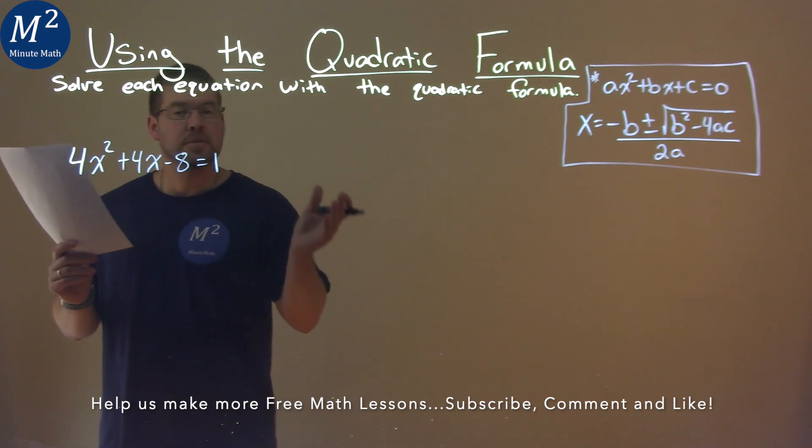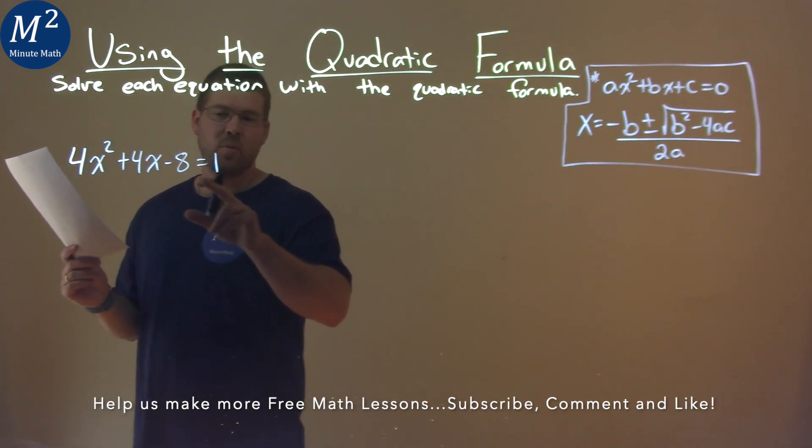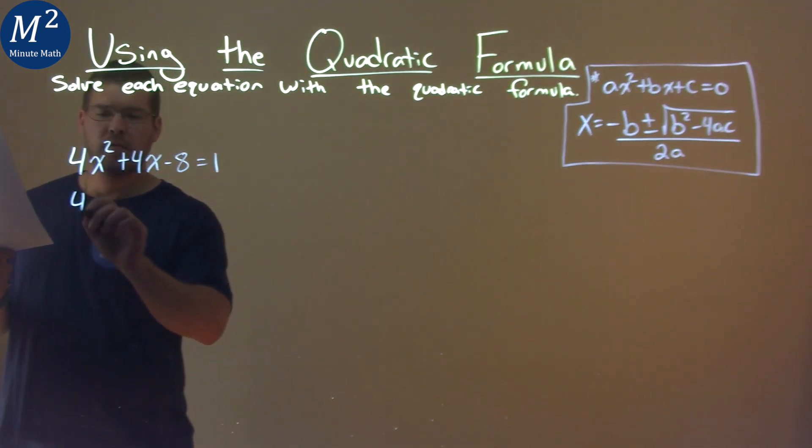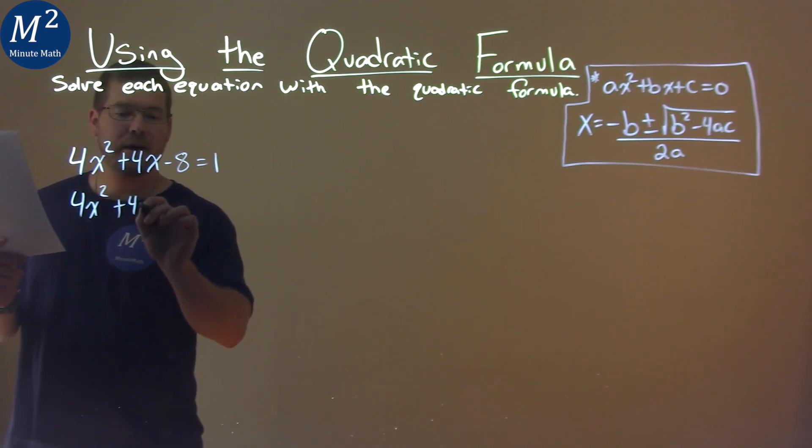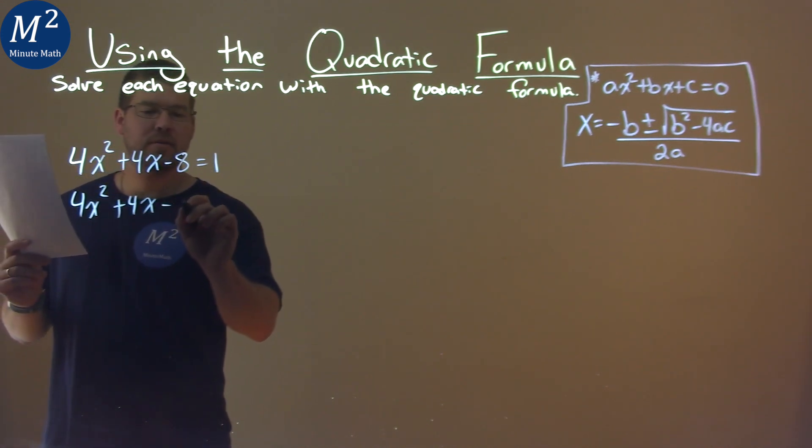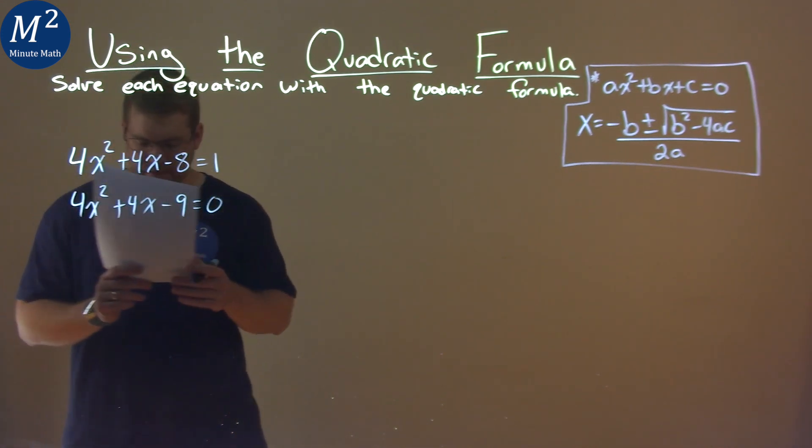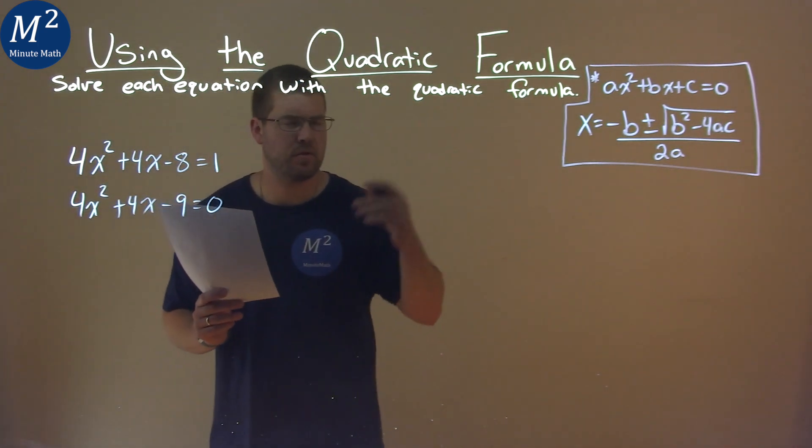I want to bring all my terms to the left hand side, so really this one needs to go over here. 4x squared plus 4x, and negative 8 minus 1 is negative 9. But it's equal to 0 now, and so we can use the quadratic formula.